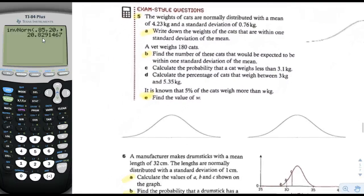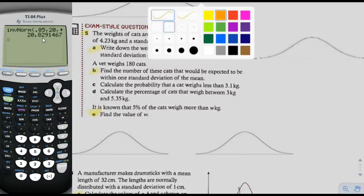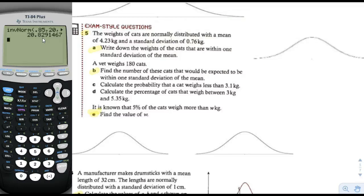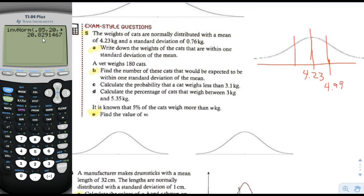The weight of cats is normally distributed with a mean of 4.23 kilograms and a standard deviation of 0.76 grams. We are going to draw a sketch. Even if they don't tell you to do a sketch, I want you to do it because it really helps you understand negative infinity, positive infinity, left, right. Add 0.76 to 4.23 — that's 4.99. Subtract 0.76 from 4.23 — that gives us 3.47.